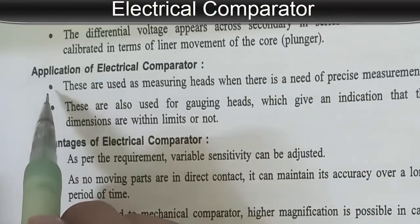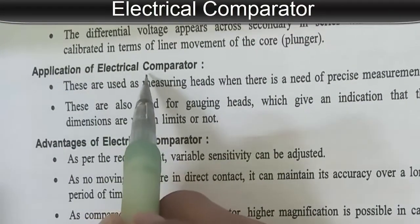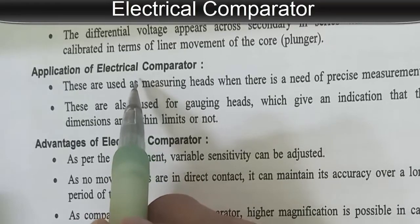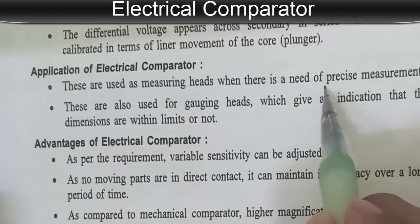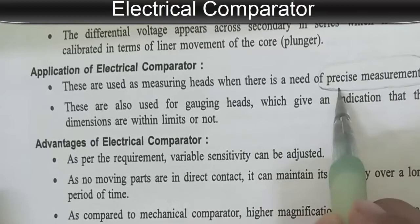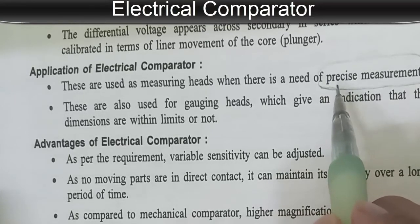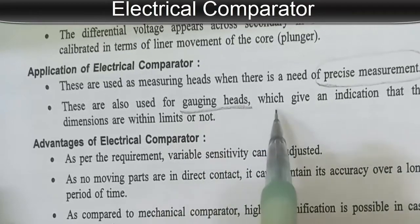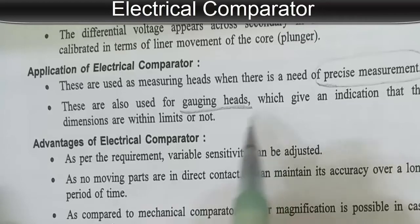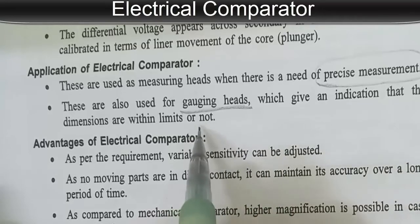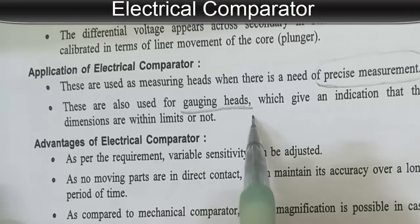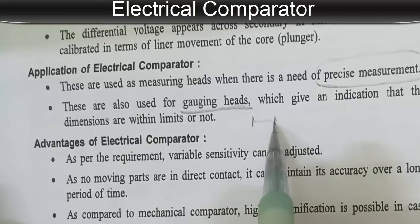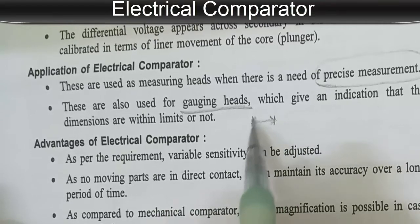Now, applications of the electrical comparator: whenever precise measurement is required, we can use the electrical comparator. It is also used for the gauging head, which gives an indication of whether the dimensions are within the limit or not.